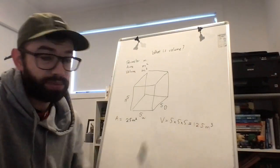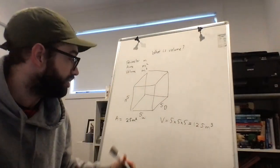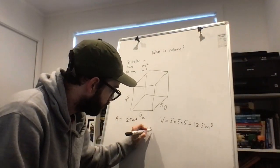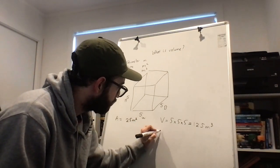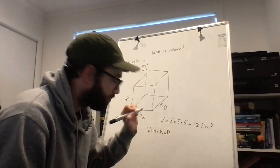So the three represents the fact that it's cubed, that there are three dimensions we're looking at. So the formula would be volume equals height times width times depth.